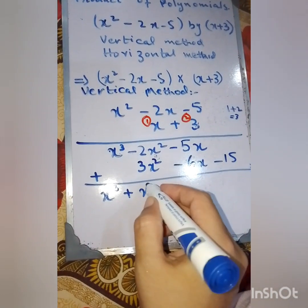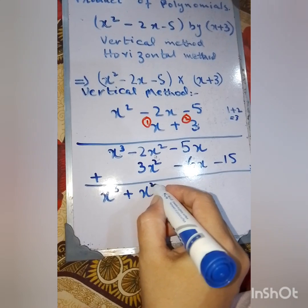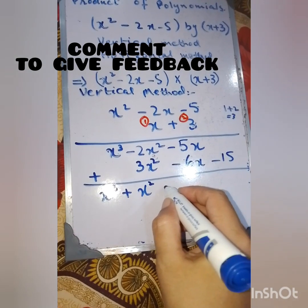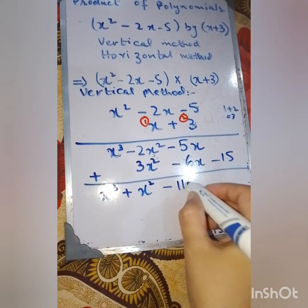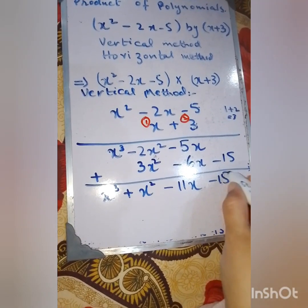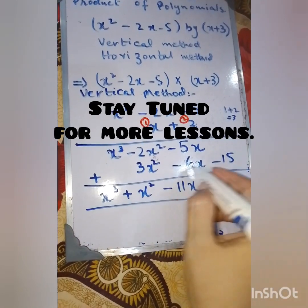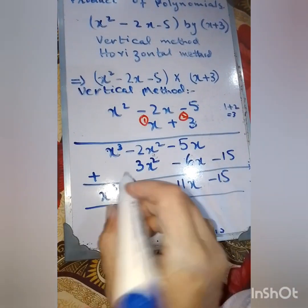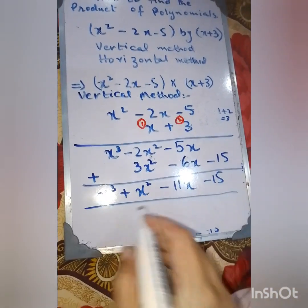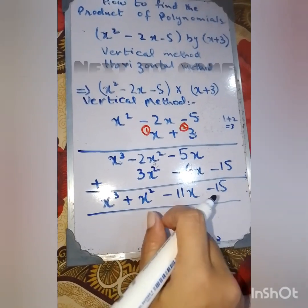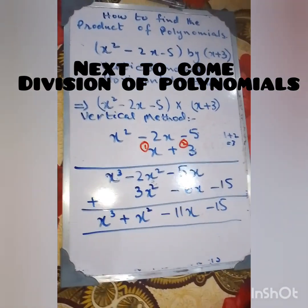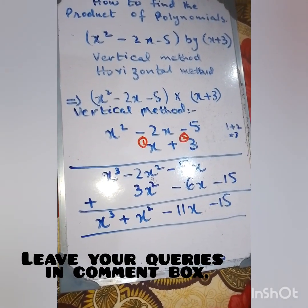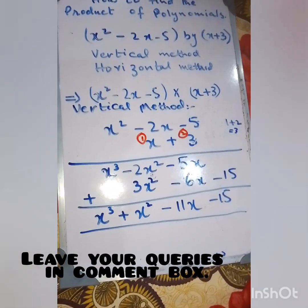Adding the x squared column: 3 minus 2 equals 1, so plus x squared. For the x column: minus sign from the greater number 6, and 6 minus 5 equals 11, so minus 11x. Constant is minus 15. The answer is x cubed plus x squared minus 11x minus 15 — the same as the horizontal method. I hope you have understood the concept. Next we will cover division of polynomials. Allah Hafiz.